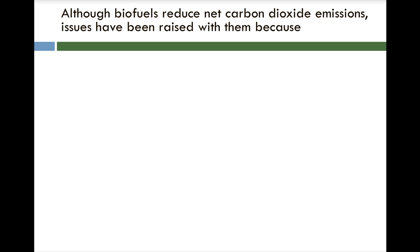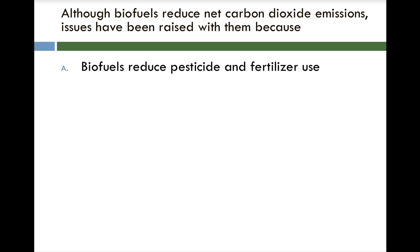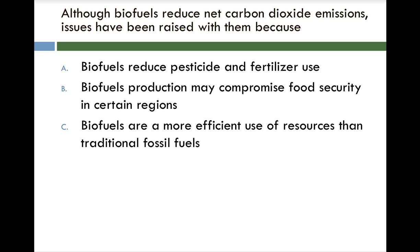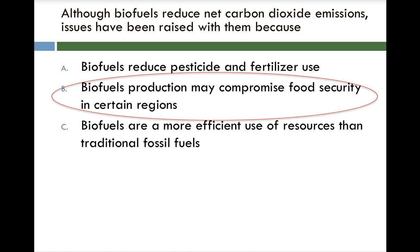Quiz question: although biofuels reduce net carbon dioxide emissions, issues have been raised because — A, biofuels reduce pesticide and fertilizer use; B, biofuel production may compromise food security in certain regions; or C, biofuels are a more efficient use of resources than traditional fossil fuels. The correct answer is B — biofuel production may compromise food security in certain regions, because using cropland to grow fuels means we can't use that land to grow food.